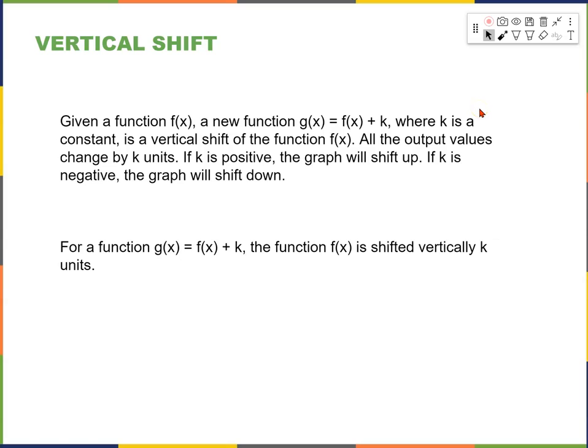The first transformation is vertical shift. Given a function f of x, a new function g of x equals f of x plus k, where k is a constant, is a vertical shift of the function f of x. All the output values change by k units. If k is positive, the graph will shift up.